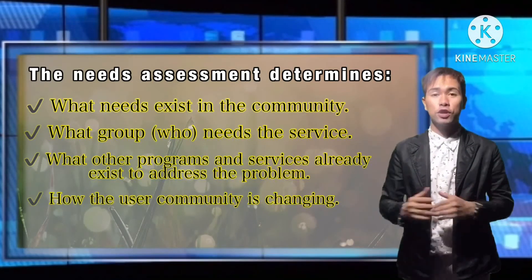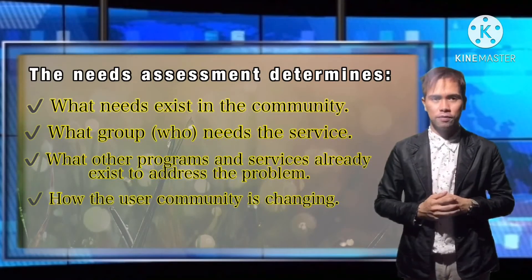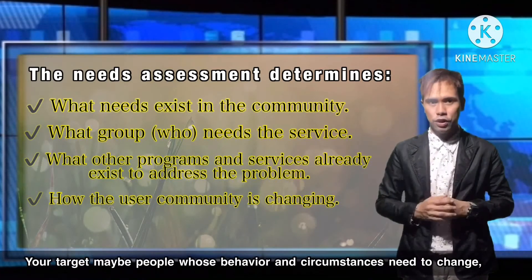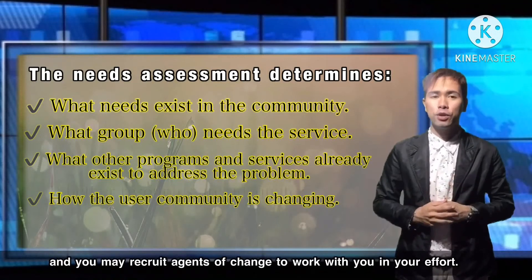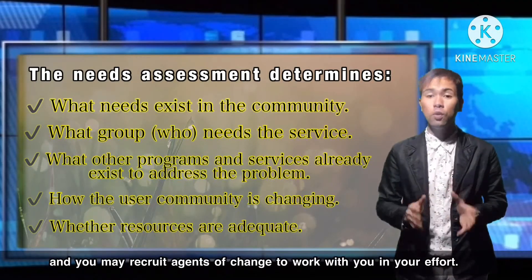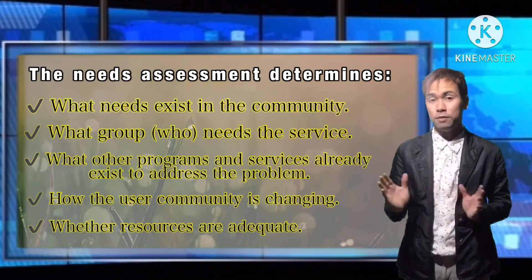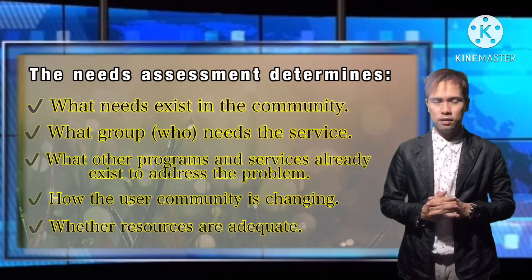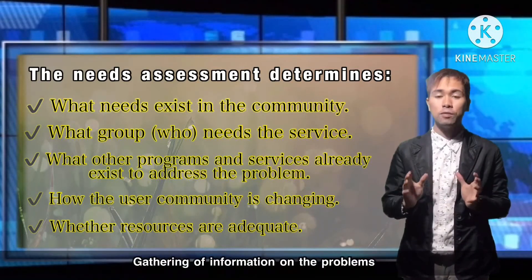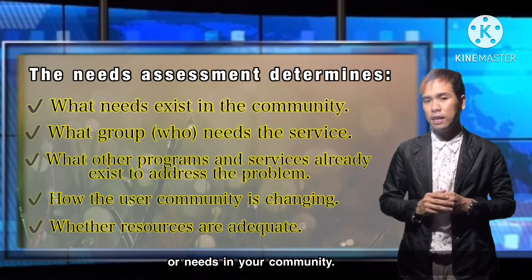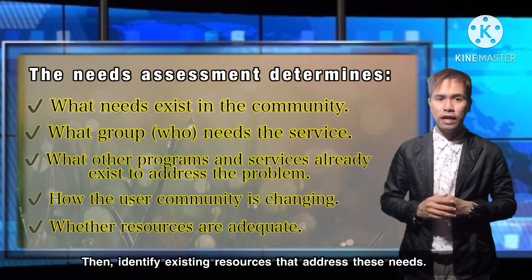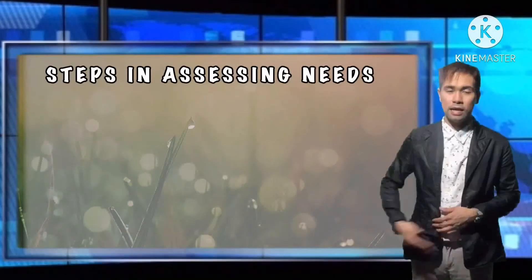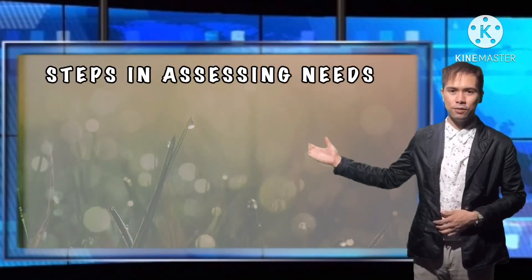Number 4: how the user community is changing. Your target may be people whose behavior or circumstances need to change, and you may recruit agents of change to work with you in your effort. Number 5: whether resources are adequate. Gathering of information on the problems or needs in your community, then identify existing resources that address these needs.